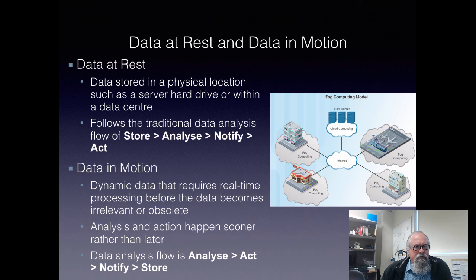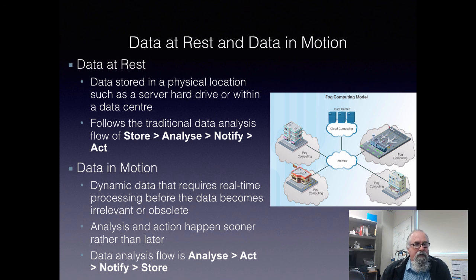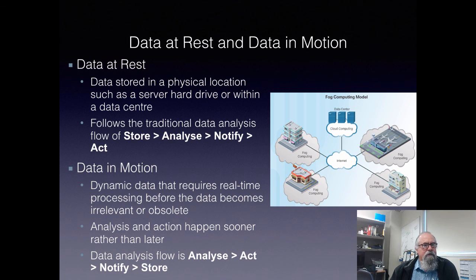However, when we have things like sensors, the data is in motion. It's dynamic, it's done in real time — we're measuring the movement of cars across a bridge in real time. We quite often can't process that data before it becomes obsolete. If we want to see if a car is speeding, by the time we process the data to work out it has passed us and it is speeding, it's too late — it's already left the bridge. So we need to analyze and take action sooner rather than later. When data is in motion, the flow is: analyze, act first, then notify, then store — a very different flow that has to be handled differently.